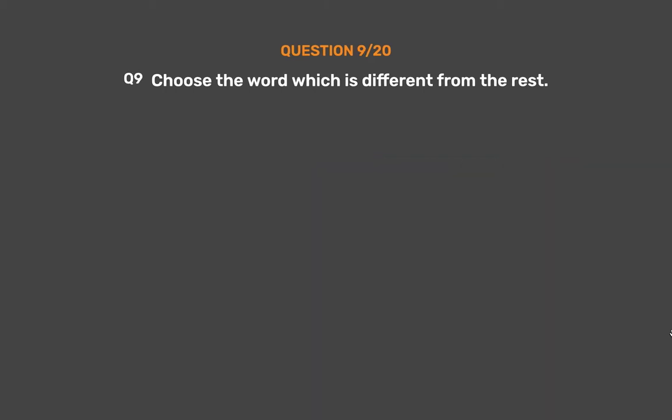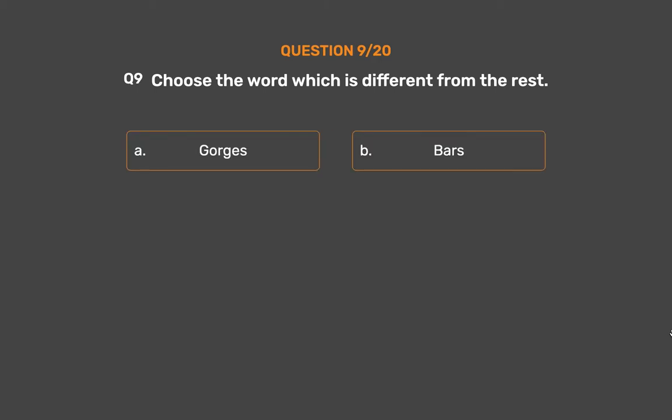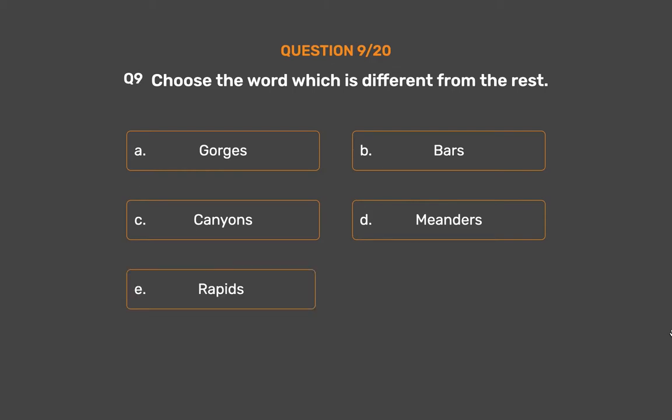Question number 9. Choose the word which is different from the rest. Option A: Gorges. Option B: Bars. Option C: Canyons. Option D: Meanders. Option E: Rapids.